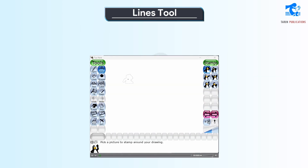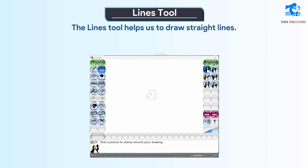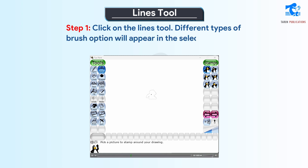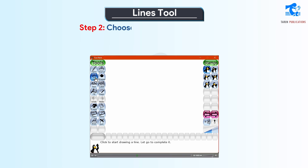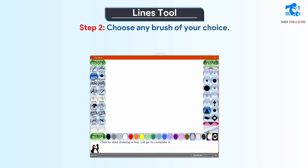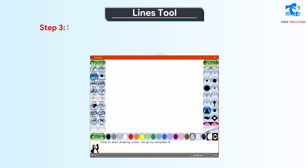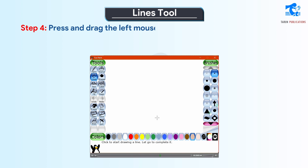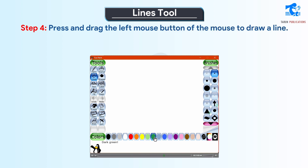Lines tool. The lines tool helps us to draw straight lines. Follow these steps to use the lines tool. Step 1: Click on the lines tool. Different types of brush options will appear in the selector. Step 2: Choose any brush of your choice. Step 3: Select the color of your choice from the colors palette. Step 4: Press and drag the left mouse button to draw a line.